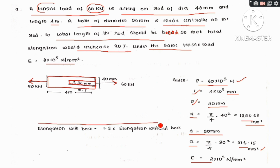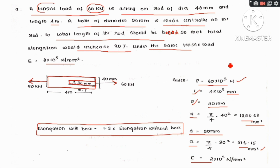The key equation is: elongation with bore equals 1.2 times elongation without bore. If elongation without bore is 100 units, then elongation with bore is 120 units — that is 20% more.